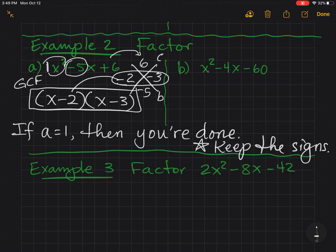If we were to foil this back out, x times x gives you the x squared. Outer and inner will give me the negative 5x, and last will give me the 6. Let's try it again with part B.